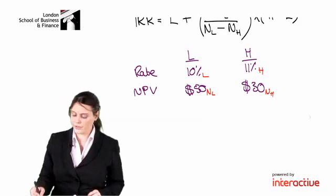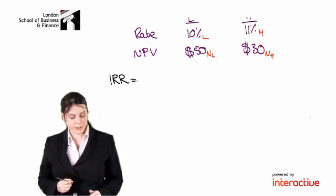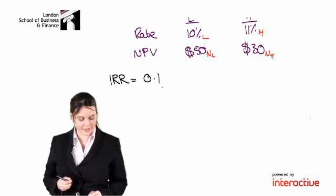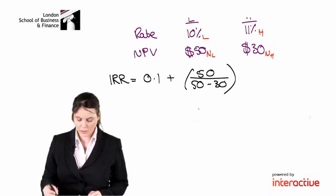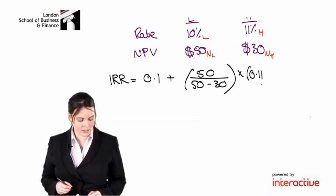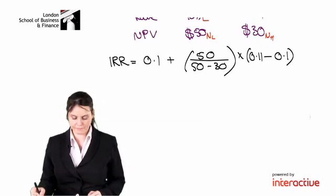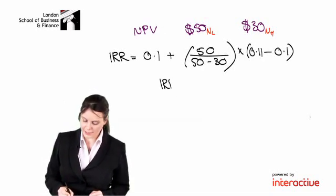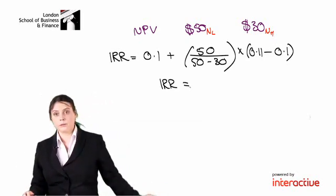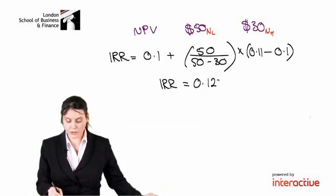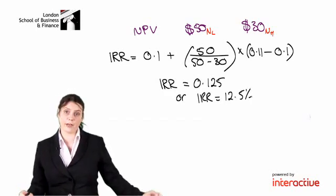So this means that the IRR for this project is the lower rate, 0.1, plus 50 divided by 50 minus 30, all multiply by the higher rate, 0.11, minus the lower rate, 0.1. Work that through on your calculators please, and what do you get? Well you should get 0.125, so we can say that the IRR is 12.5%.